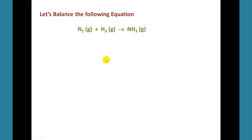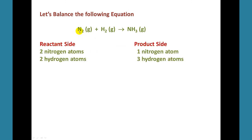Let's balance a chemical equation. Here we have nitrogen gas and hydrogen gas to produce ammonia. Notice the lowercase g in parentheses — that indicates that we have a gas. Let's count how many atoms of each type are on the reactant side and on the product side. On the reactant side, I have two nitrogen atoms and two hydrogen atoms. On the product side, I have one nitrogen atom and three hydrogen atoms. So I need to balance the equation.